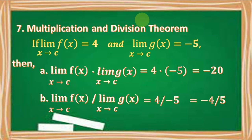Number 7: Given the limit of f of x as x approaches c equals 4 and the limit of g of x as x approaches c equals negative 5. Letter B: The limit of f of x times g of x as x approaches c equals 4 times negative 5, which equals negative 20. Letter C: The limit equals negative 4 over 5.